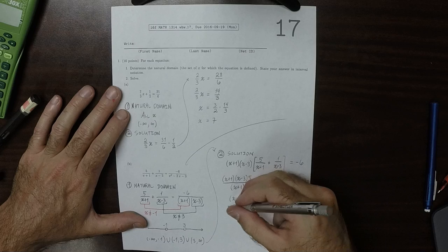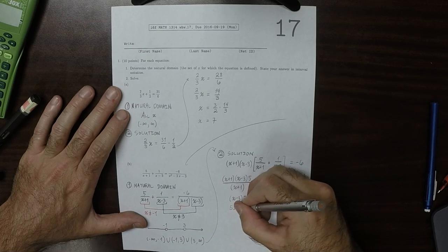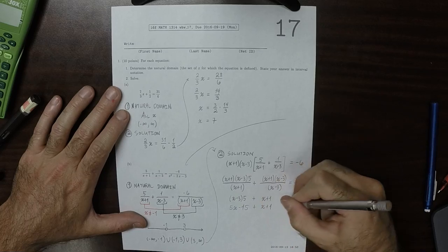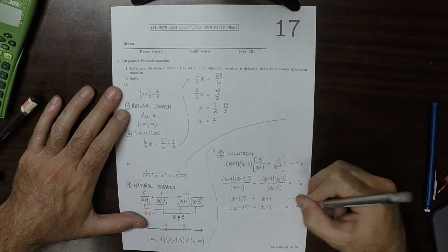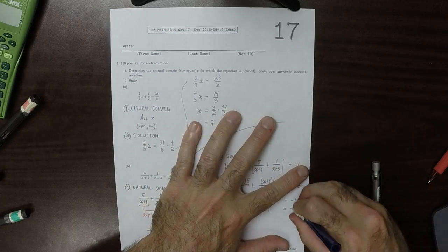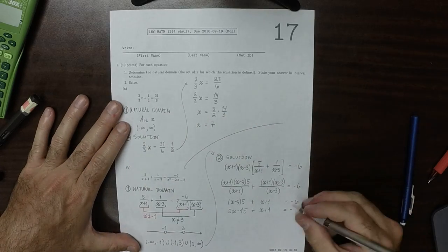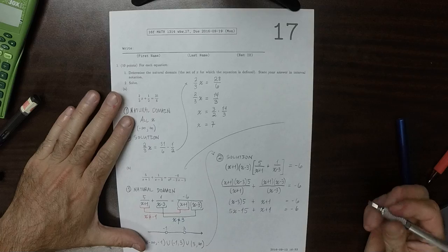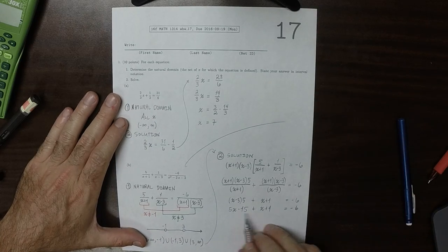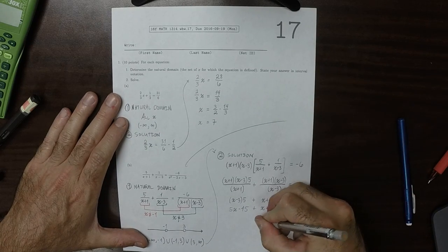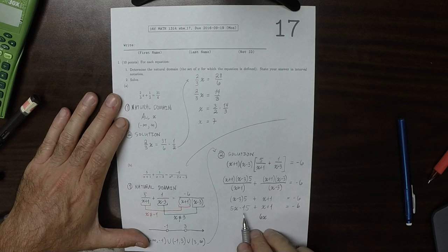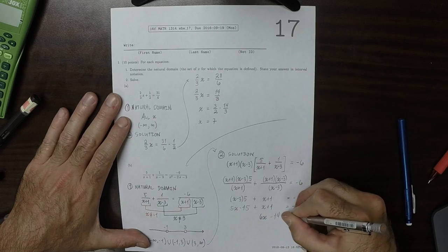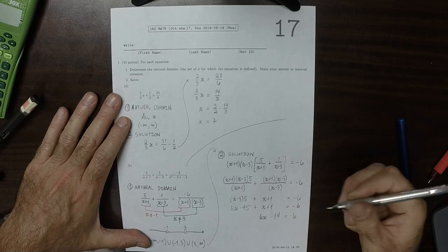So this would be 5x minus 15 and then plus x plus 1 is negative 6. So 5x plus x, well, that's 6x, so 6x. And then negative 15 plus 1, that's minus 14, that's negative 6.